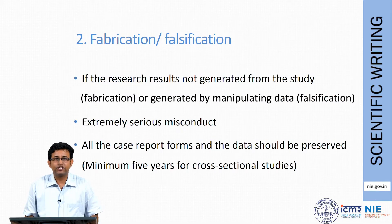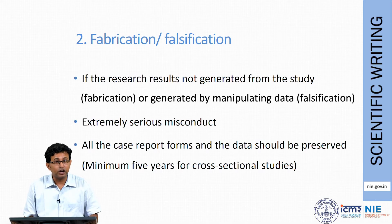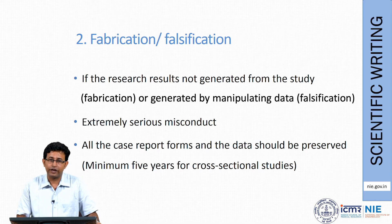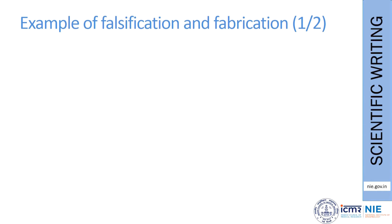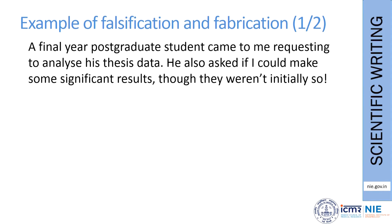The second component is fabrication and falsification. If research results are not generated from the study, we call it fabrication. If results are generated by manipulating data, we call it falsification. These are extremely serious misconducts. You must preserve your data for a sufficiently long duration in paper or electronic form. For example, a final year postgraduate student asked me to analyze his thesis data and make the results significant — he wanted me to manipulate the data to get his desired findings. This is falsification.